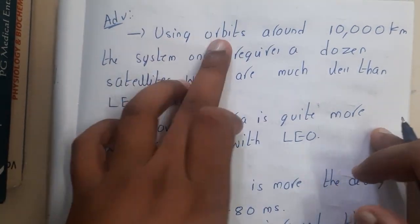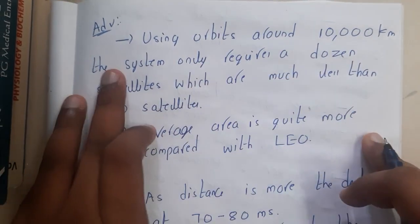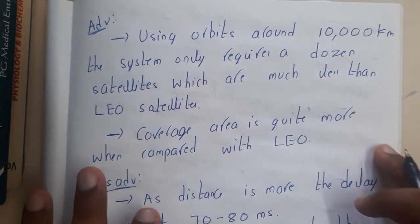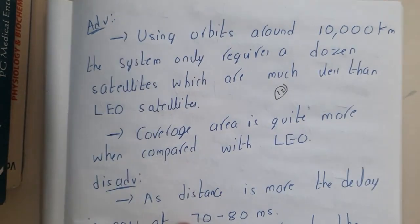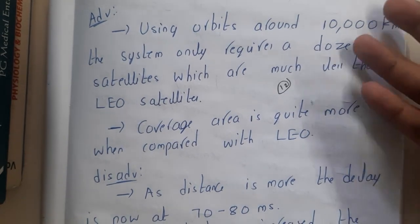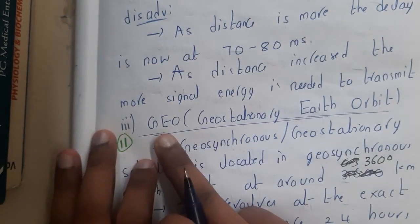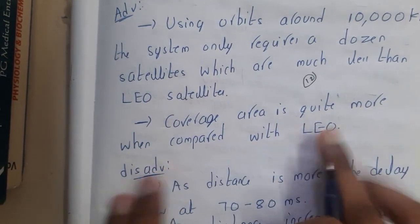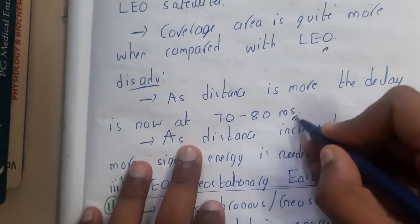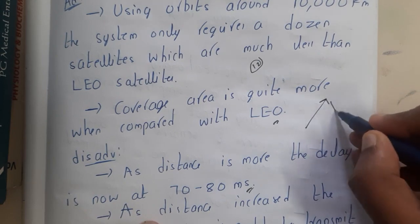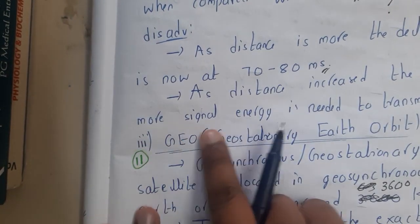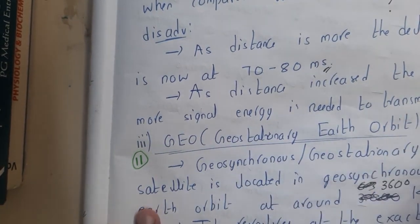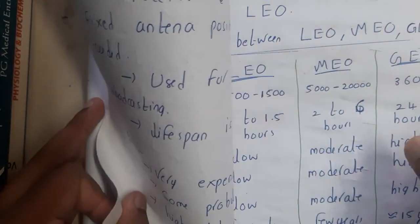Using orbits around 10,000 kilometers, the system only requires about a dozen satellites to cover the whole earth surface. That is a major advantage. The coverage area is quite more compared to LEOs. However, the major disadvantage is increased delay, since the message must travel 10,000 kilometers and back. More distance also means more signal energy is needed to transmit.